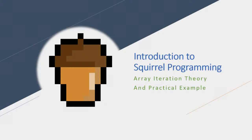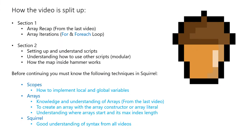Hello and welcome back to the Introduction to Squirrel Programming. Today we're going to be doing Array Iteration Theory and a Practical Example. This is a continuation from the last video. This video is in two sections: an array recap, array iterations, setting up and understanding scripts and how to use other scripts, modular programming, and how the map works inside with these examples. Make sure you know all the techniques from below before starting this video.